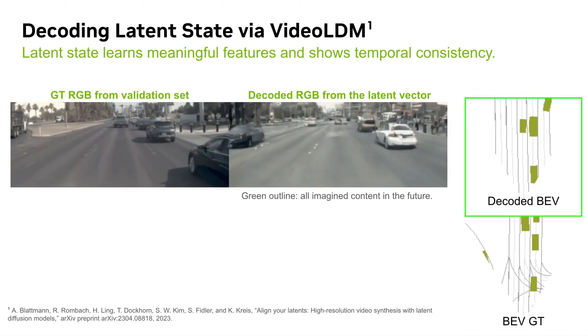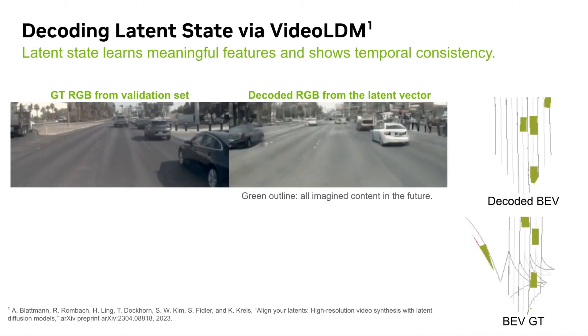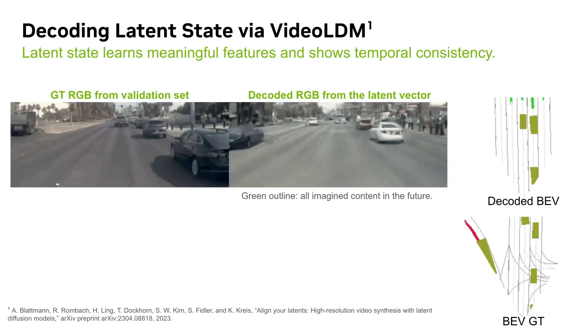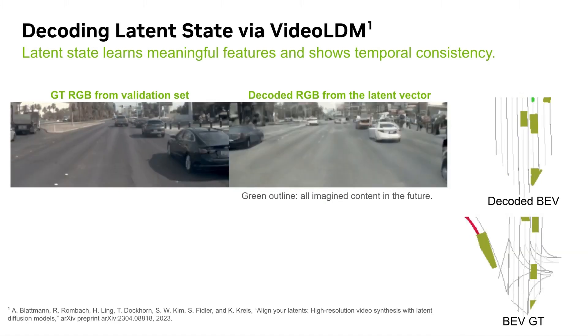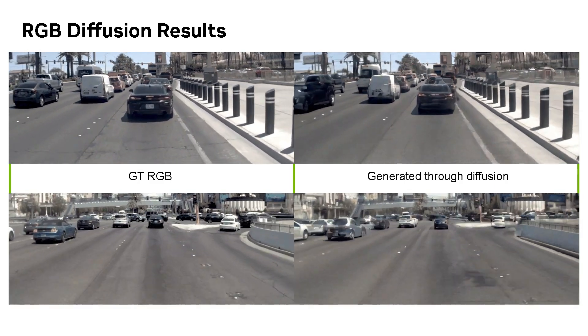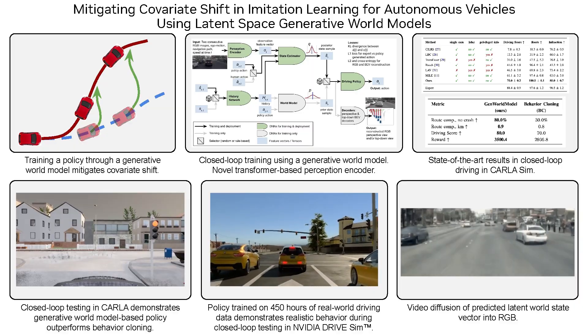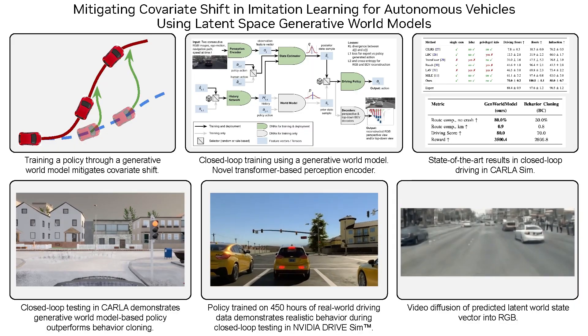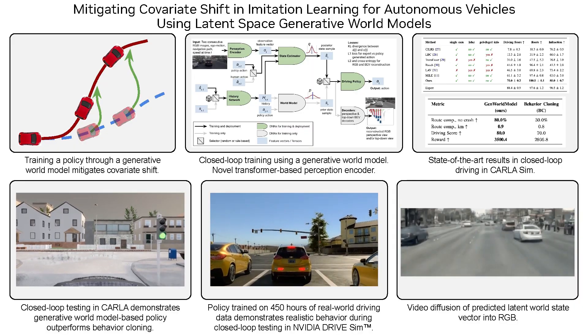Finally, we show results on the new plan dataset: how the prior or the posterior latent states can be decoded into temporally consistent RGB and BEV images using latent diffusion models. We invite you to read our paper for more details. Thank you.